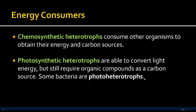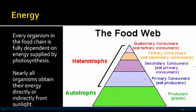Every organism in the food chain is fully dependent on the energy supply from photosynthesis. Nearly all organisms obtain their energy directly or indirectly from sunlight. The sun is required by autotrophs to make energy through photosynthesis, and then we eat those plants — or other organisms eat those plants and we eat those organisms. So we rely heavily on autotrophs.